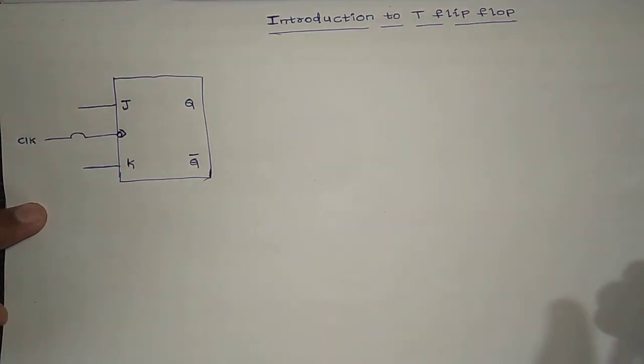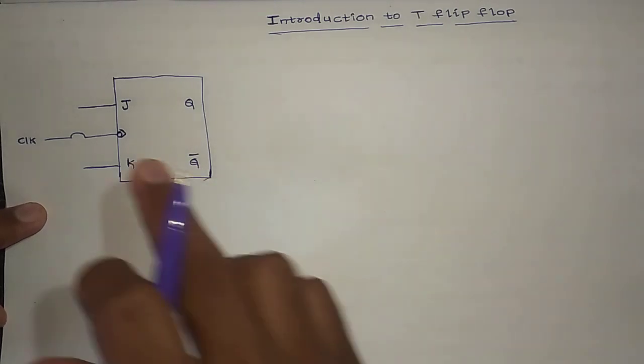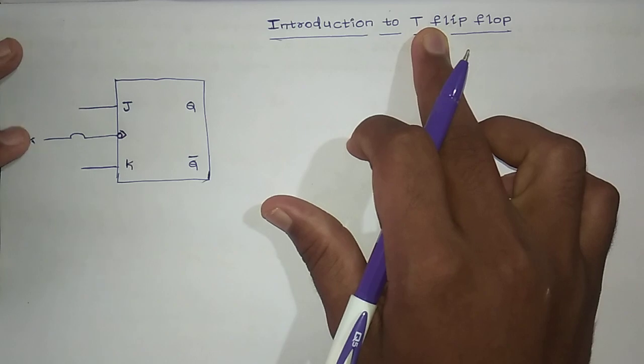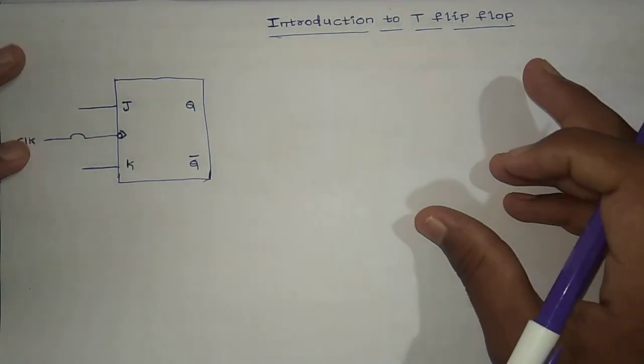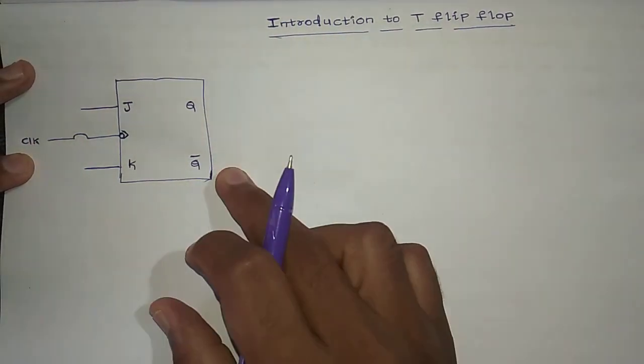J-K flip-flop would do it - that is the 1-1 condition. Generally S-R flip-flop is invalid, but J-K flip-flop with 1-1, which is input J and K, that is the toggling condition. This T flip-flop is only used for toggling.